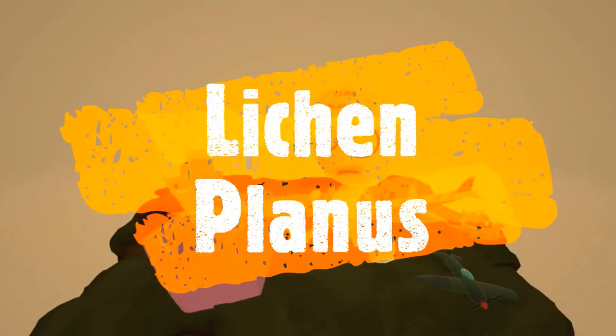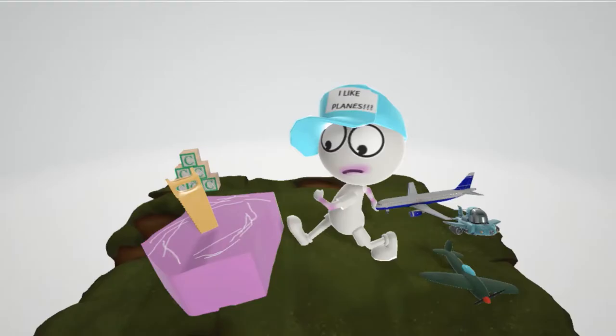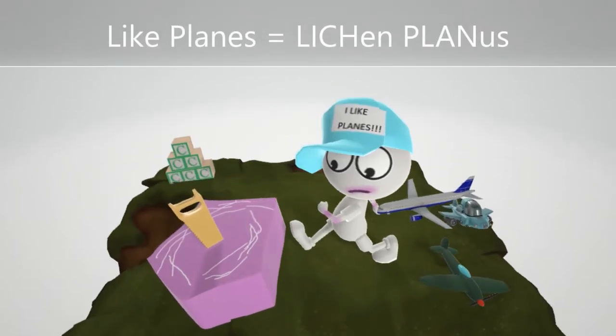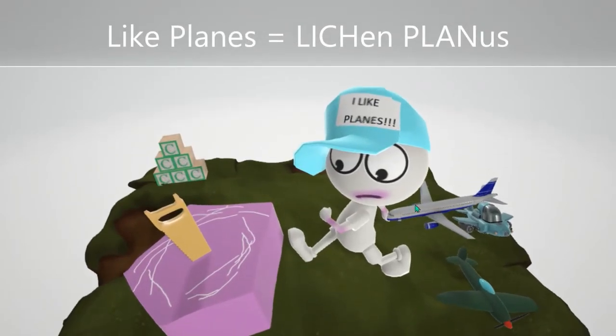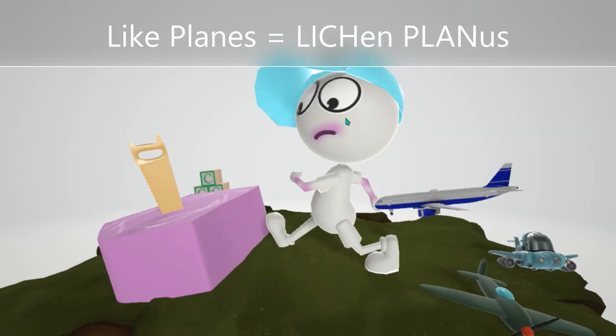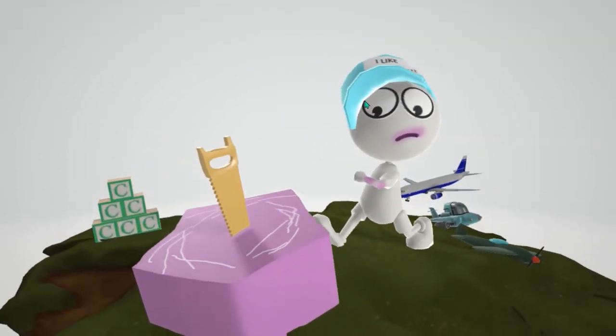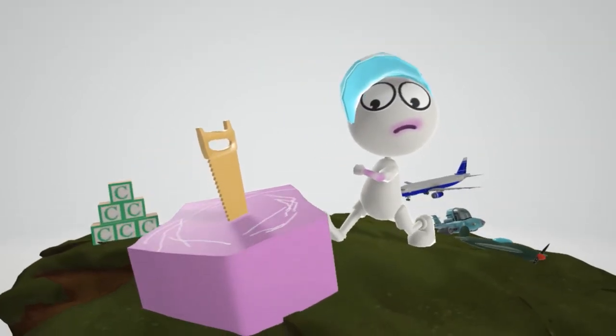In this scene we're going to talk about lichen planus, represented by this kid who likes planes. It even says in his hat I like planes and you see his toy planes over here. So I like planes for lichen planus. He was walking through the field and noticed this purple polygon.